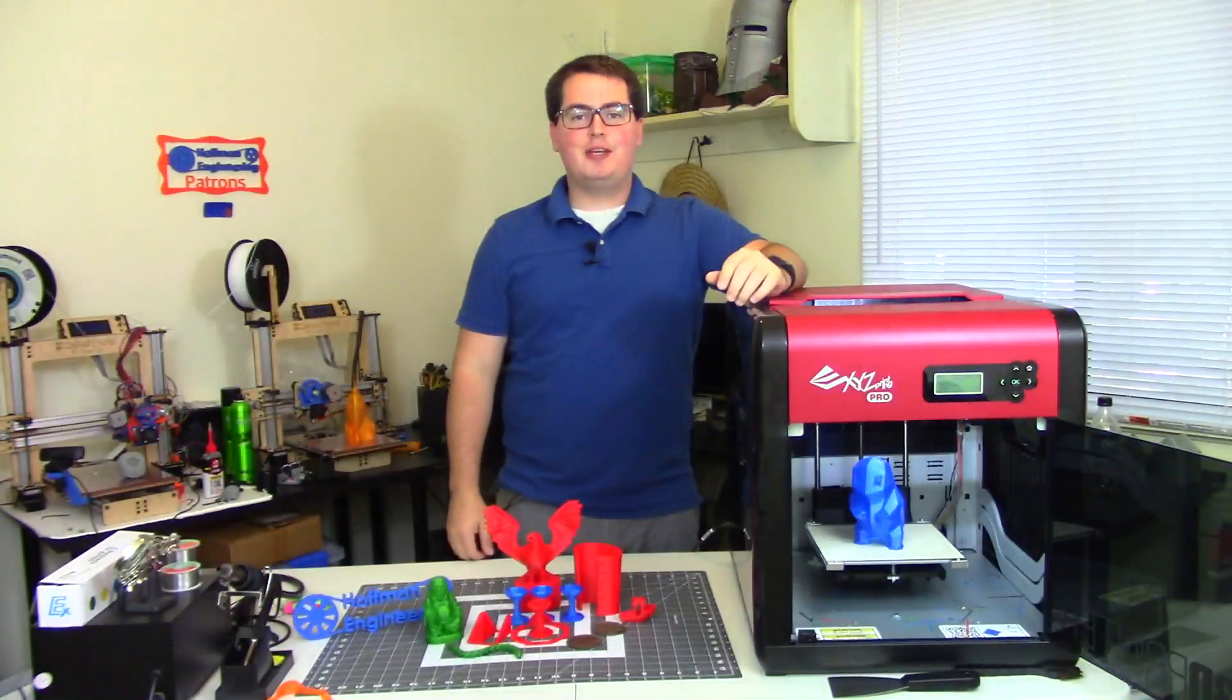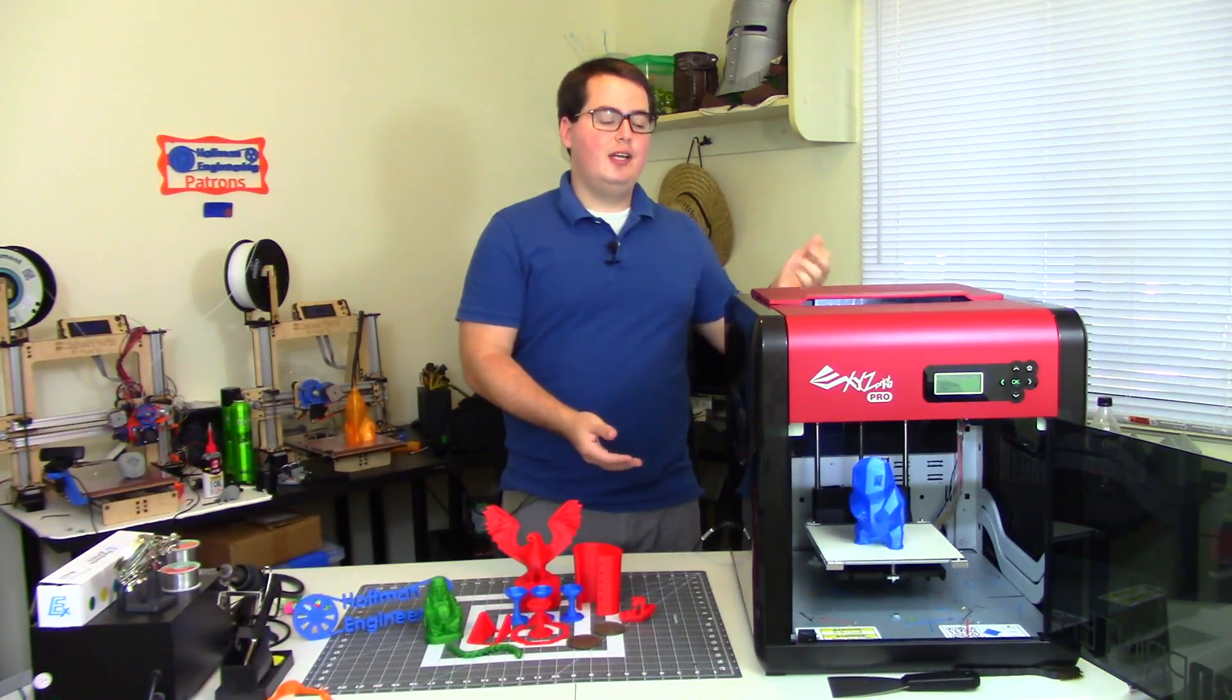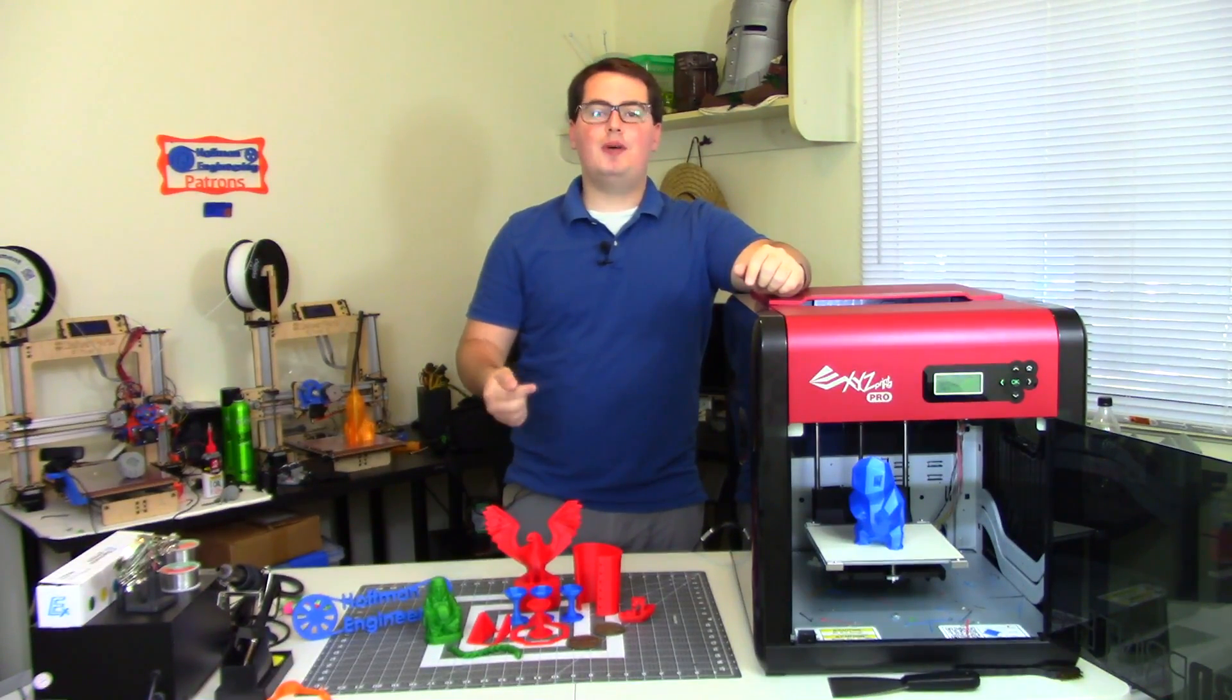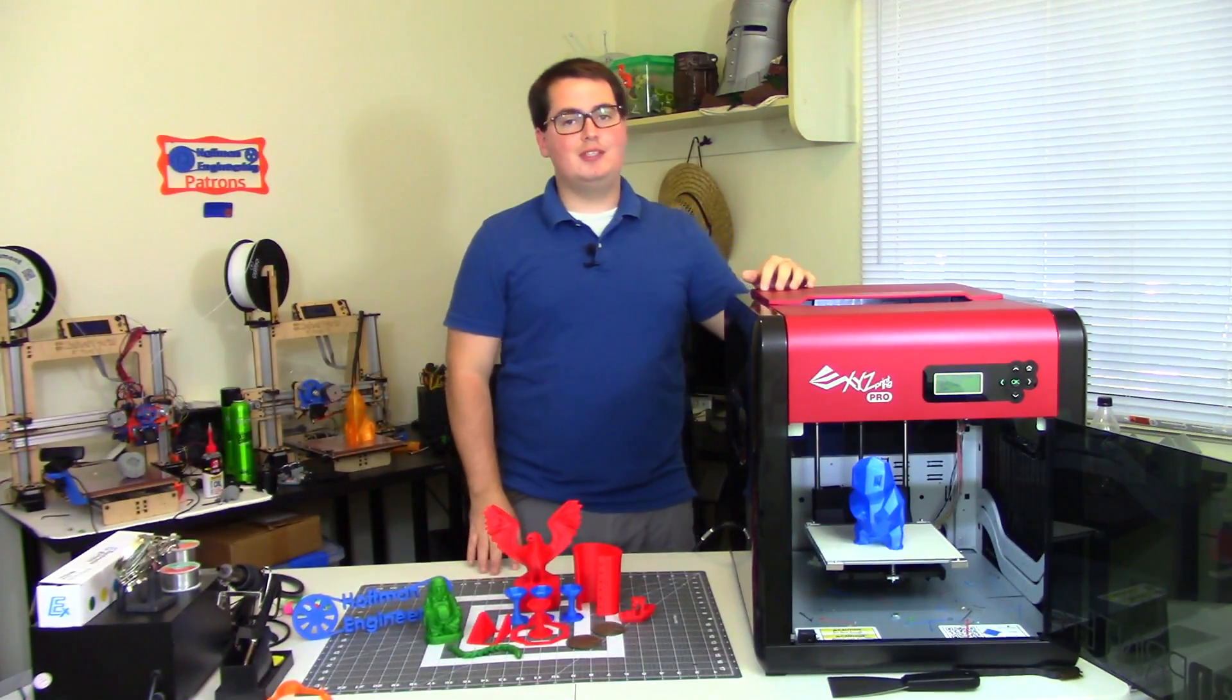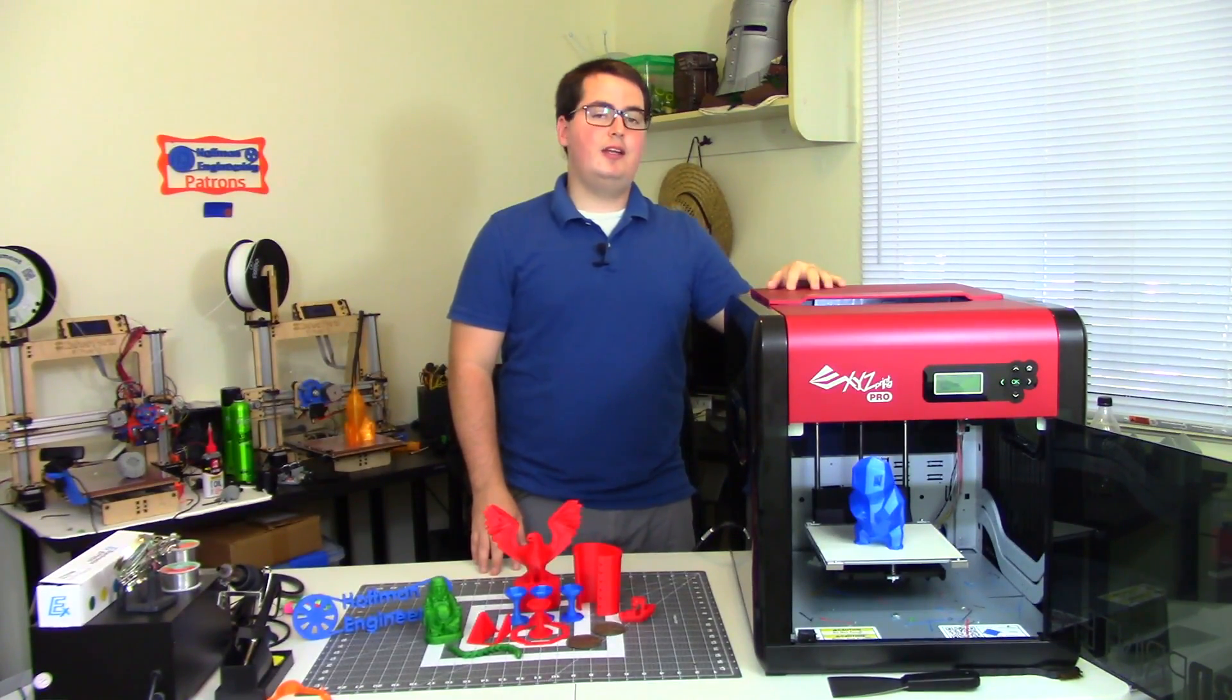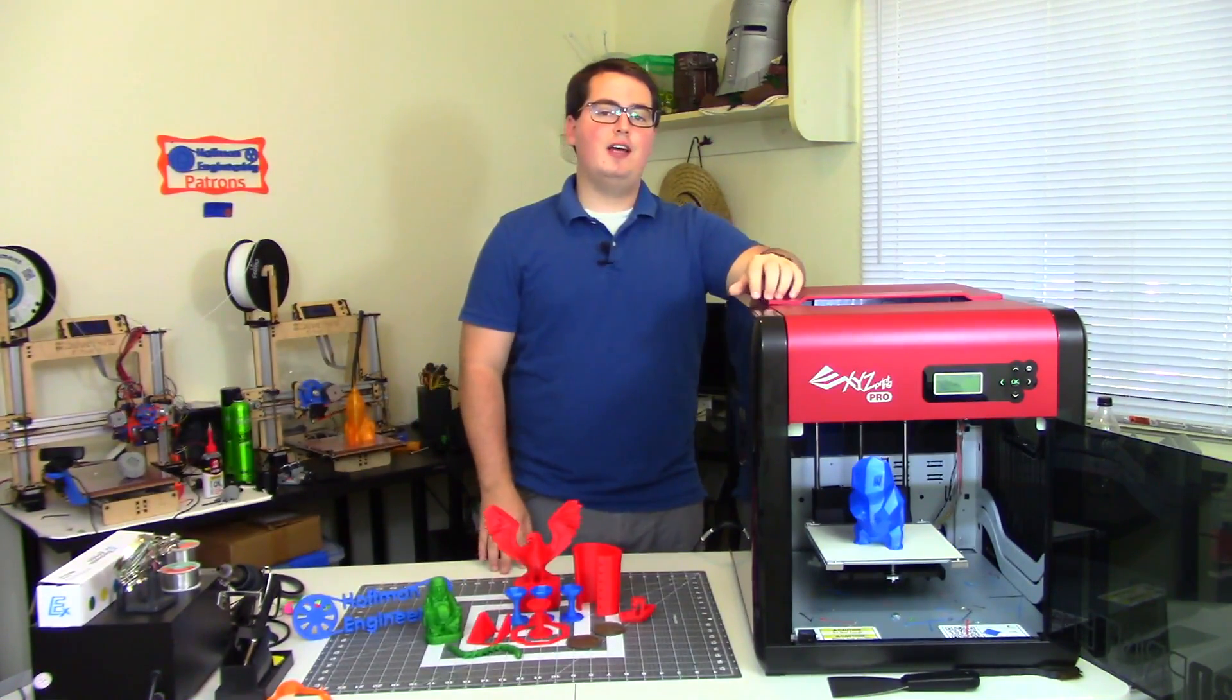But first, let's talk about the specs. The DaVinci 1.0 Pro is a fully enclosed 3D printer. It has an aluminum heated bed and boasts a print area of 7.8 x 7.8 x 7.8 inches. It has a standard 0.4mm nozzle and uses the typical 1.75mm filaments. It also is Wi-Fi compatible, so you can send or monitor prints either through USB or wirelessly through Wi-Fi.